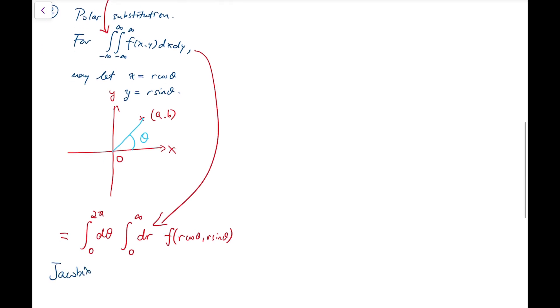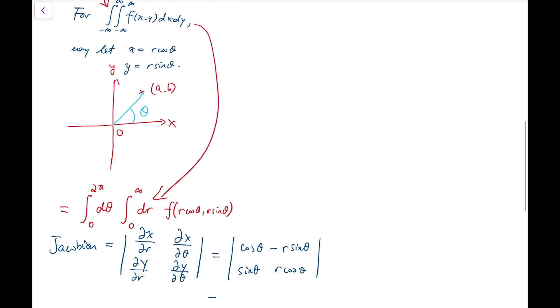The Jacobian, which is the determinant of the matrix with entries being the partial derivatives of x and y with respect to r and theta respectively. And that is, by definition, cos theta, minus r sine theta, then this is sine theta, and this is r cos theta. And by computing, we have the determinant to be equal to r. So we have to multiply an extra r in the new double integral.